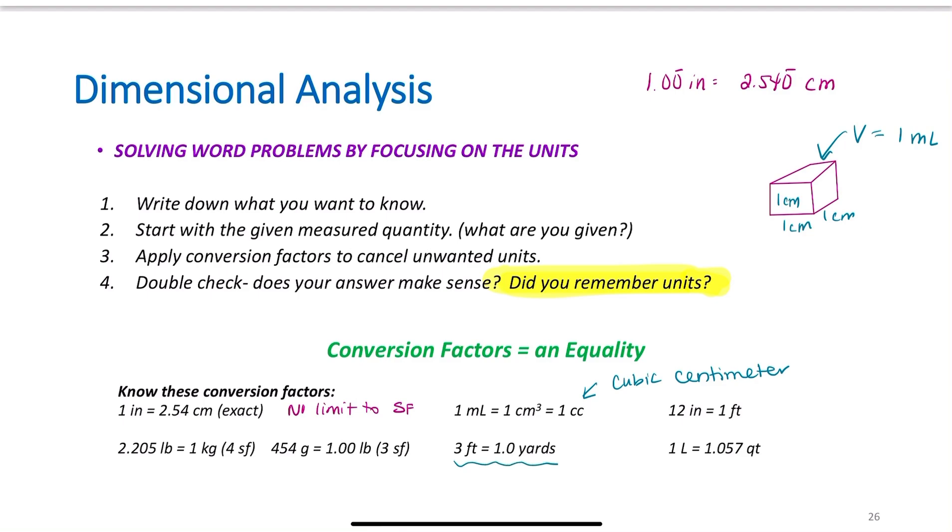12 inches in 1 foot. Most people know that one, but if you don't, make sure you know it. 3 feet to 1 yard. 2.205 pounds equals 1 kilogram - that is 4 sig figs. 454 grams to 1 pound is 3 sig figs. These will limit your calculations if your measurement has a bigger number. I don't care which one you know, but you need to know one of them. You have to be able to convert mass, volume, and length between the metric system and the empirical or American system. Either 2.205 pounds to 1 kilogram or 454 grams to 1 pound. I don't care which one you use as long as you can do your calculations. One liter is 1.057 quarts.